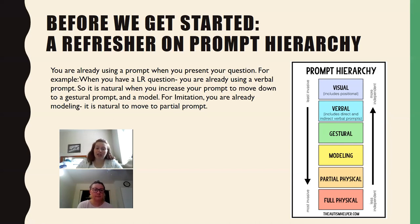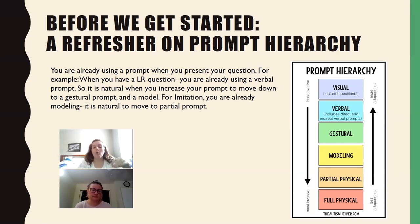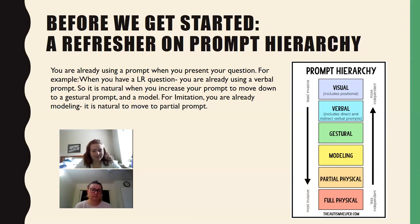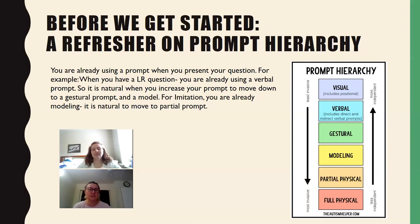For imitation, you are already modeling — you're already way down in that middle. Which is why when we need to prompt an imitation, we go to a partial or full physical prompt. Having the prompt hierarchy actually printed out and in the vicinity of your teaching area is really helpful as a quick reference, because in that moment it's easy to forget and go with gut instinct and miss a few steps in between.